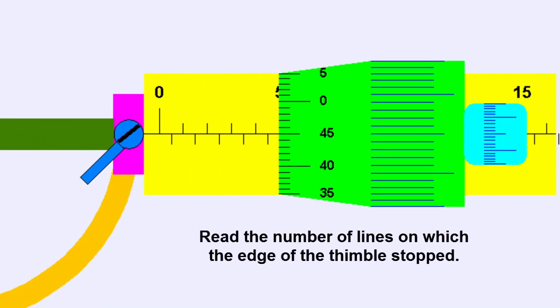Read the number of lines on which the edge of the thimble stopped. In this case, it is at 4.5 mm.